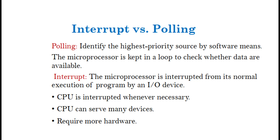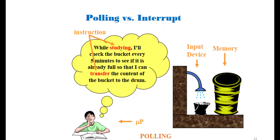Polling vs Interrupt: In Polling, the microprocessor is kept in a loop to check whether data are available. In Interrupt mode, the microprocessor is interrupted from its normal execution of a program by an I/O device. The CPU is interrupted whenever necessary, and the CPU can serve many devices, but interrupt requires more hardware.